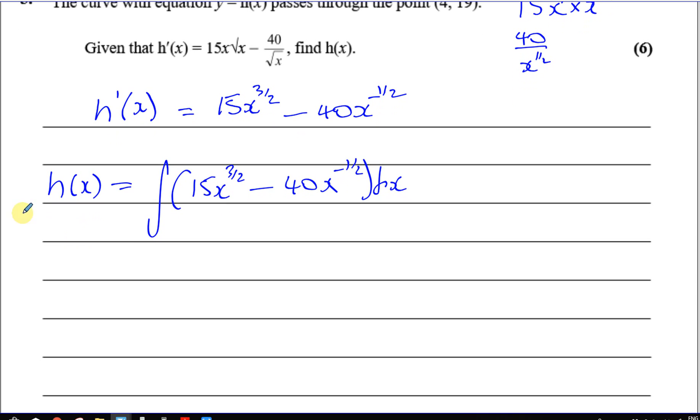So I have to integrate this. Remember, to integrate you have to add one to the power. So you have 15x to the power of three over two plus one, which is three over two plus two over two, which is five over two. So I've got to divide that by the new power, which is five over two. Minus, and you're going to add one to the power here, so you have 40x to the power of positive a half divided by positive a half.